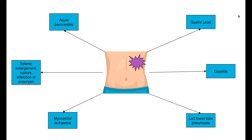It is also important to have a detailed physical examination, including per rectal examination, looking at hernia orifices, urine dip, and routine blood tests such as full blood count, U and E, liver function tests, CRP, and amylase or lipase.